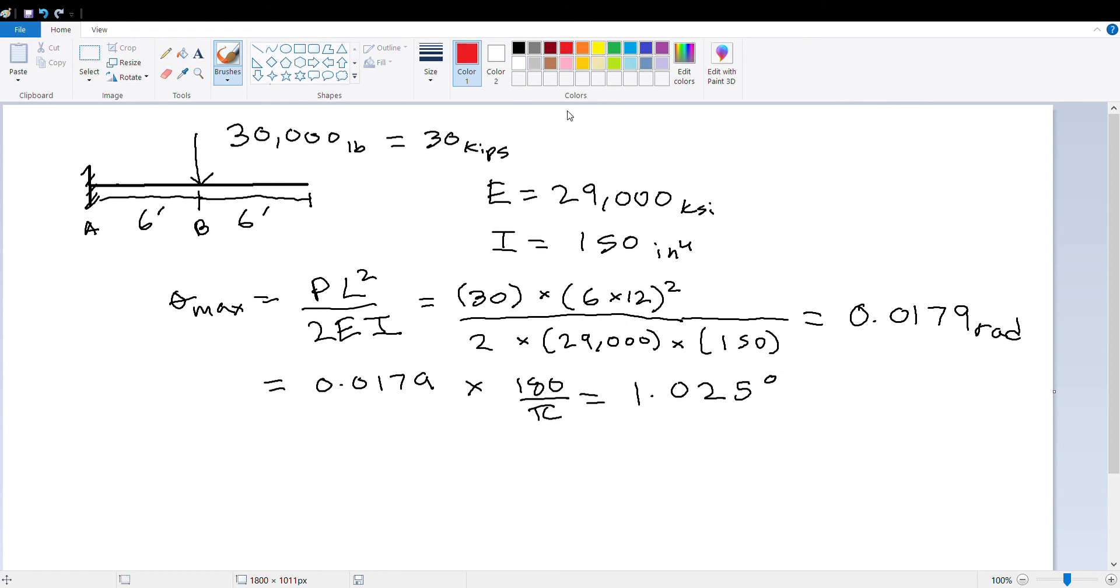So that's your answer. So how do we do this again? You have a cantilever situation with a point load, and you just have to get the formula, the equation for the maximum rotation: PL² over 2EI. You're going to be given some givens, and then just plug and chug and you get the answer in radians. Convert the radians to degrees and there is your answer.